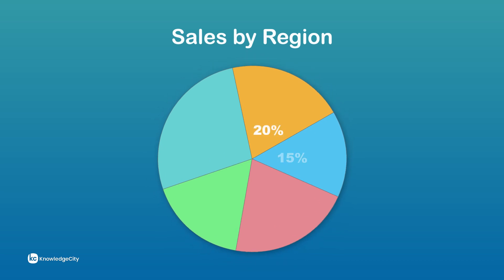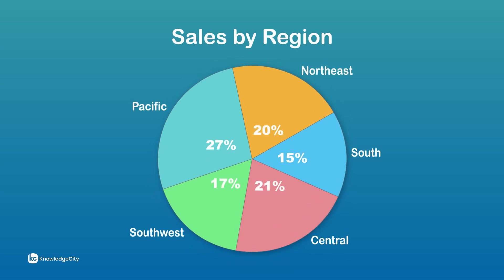Likewise, regional differences can occur between sales in different parts of the country, which can be depicted using a pie chart. This can be especially useful for planning inventory in various parts of the country. It's also useful to look at sales in terms of categories.